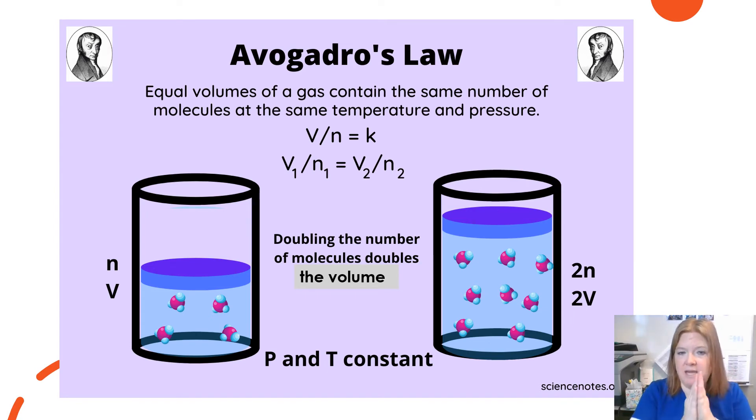So equal volumes of a gas contains the same number of molecules, as long as we have the same temperature and same pressure. So if we double the molecules, we double the volume. If we halve the molecules, we halve the volume. If we quadruple the particles, we quadruple the volume. Okay, that's Avogadro's law.